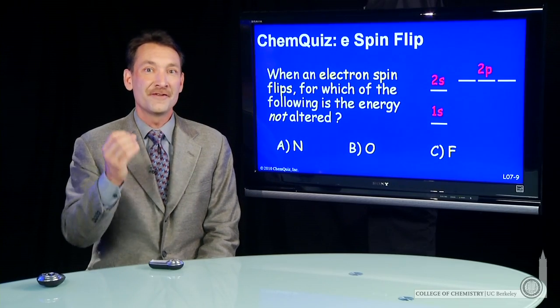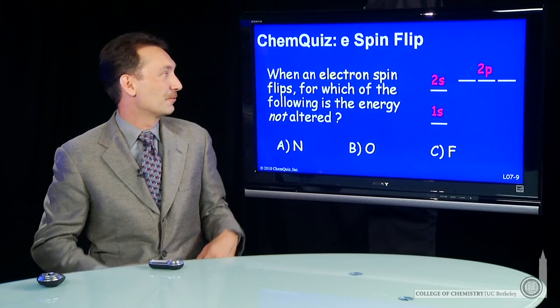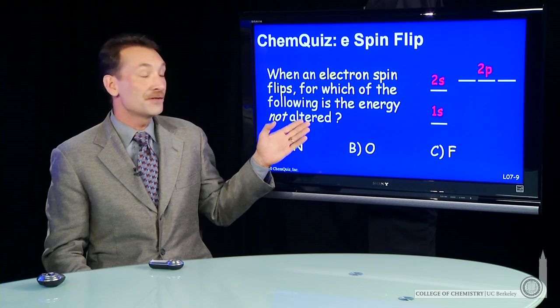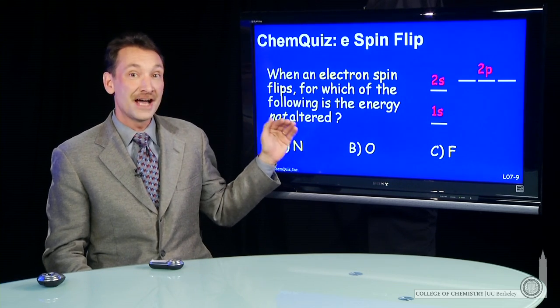So let's look at electrons in their various orbitals in forms of a chem quiz. When an electron spin flips, for which of the following is the energy not altered?